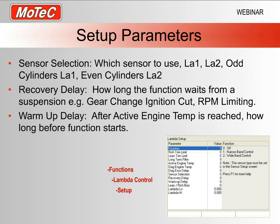The recovery delay parameter handles situations where functions interrupt our fueling or ignition — such as gear-change ignition cut or RPM limiting. When cutting ignition, the lambda sensor will read falsely lean because no oxygen has been burnt. While those functions are on, we don't want wideband lambda control operating. The ECU will automatically suspend the function, and we need to specify how quickly it comes back on — effectively how many update rate periods before the function restarts.